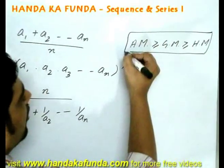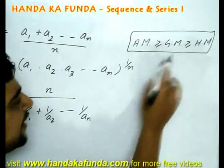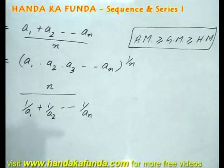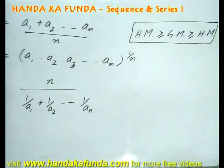This formula is always true. The equality sign however happens in one and only one case. That is when all the values, that is a1, a2, an, they are all the same.